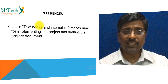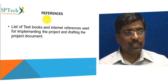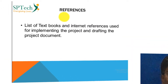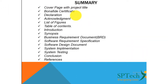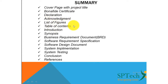References are the last chapter of your project report. Once you have finished the references, that concludes all the documents of the project report. To recap: cover page, bona fide certificate, declaration, acknowledgement, list of figures, table of contents, introduction, synopsis, business requirement document, software requirement specification, software design document, system implementation, system testing, conclusion, and references — all together make a complete and professional project report.